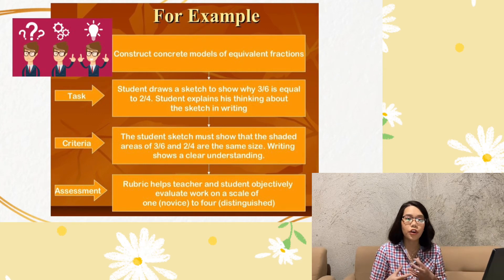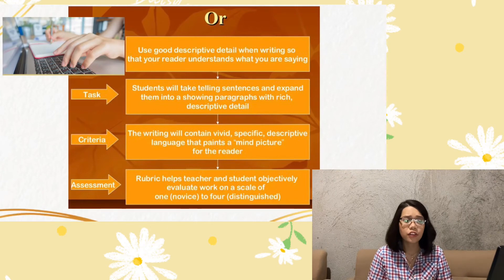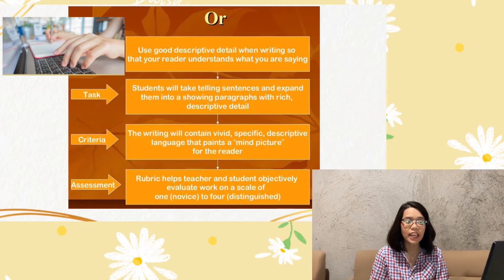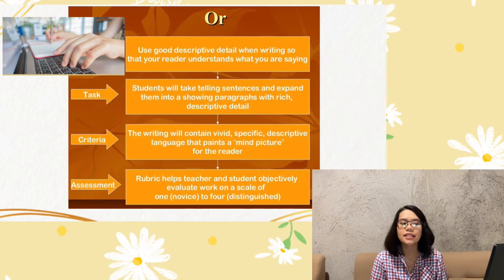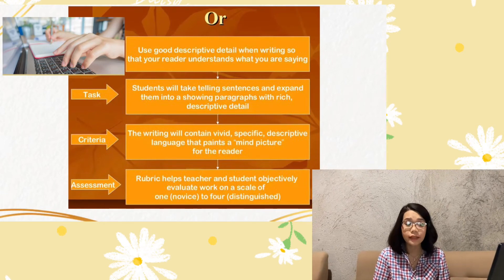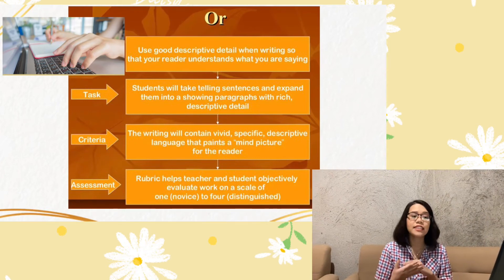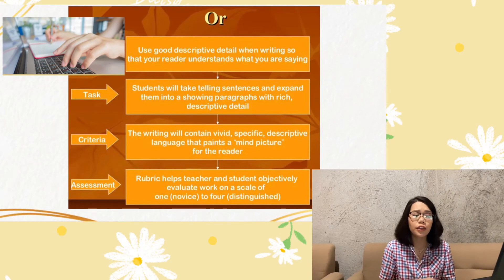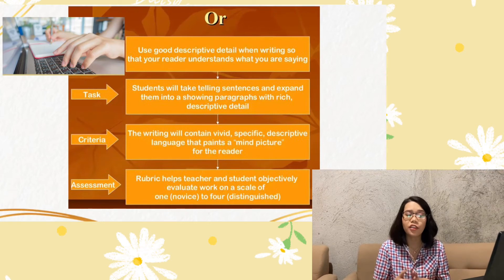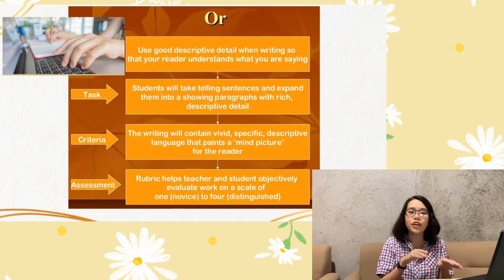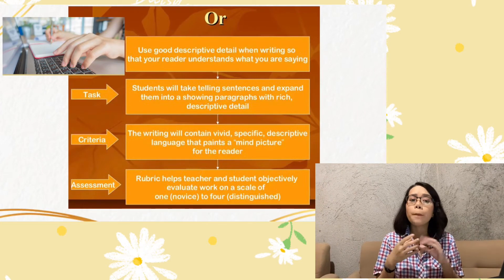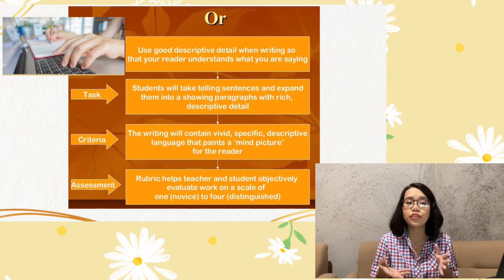Another example for an English class: at the end of the lesson, students will be able to use good descriptive detail when writing so that the reader understands what is being said. The task is that students will take telling sentences and expand them into a showing paragraph with rich descriptive detail. The criteria is that the writing will contain vivid, specific, descriptive language that paints a mind picture for the reader. The rubric will again help the teacher and students objectively evaluate work on a scale of one (novice) to four (distinguished). Remember that all the graded outputs of the students will be compiled inside a portfolio, whether digital or the traditional folder portfolio.